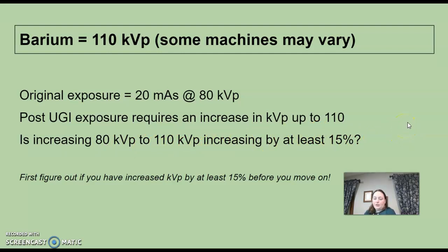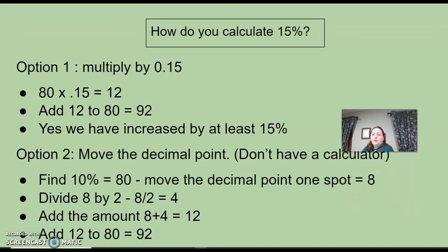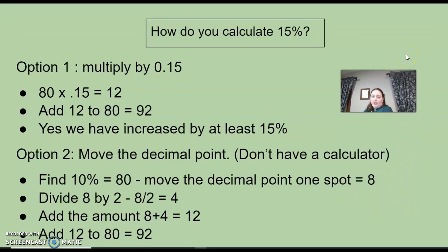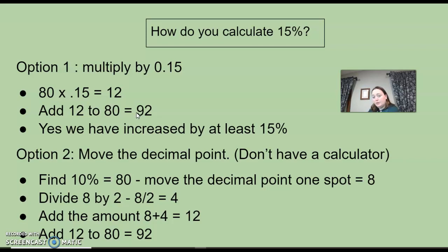We have to determine yes or no. How do you figure out 15%? Option one: multiply 80 by 0.15. That gives you 15%, which is 12. You're simply going to add that number to your original number — add 12 to 80, which gives you 92. So we went from 80 up to 92. Yes, that proves our answer — we went up by 15%.